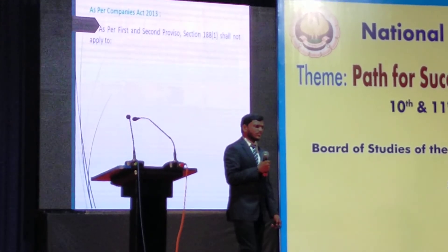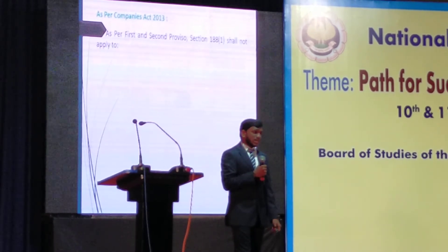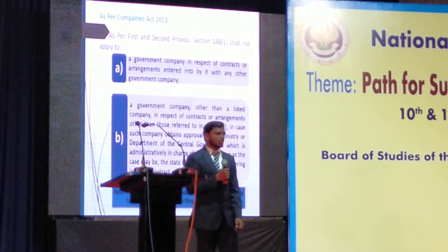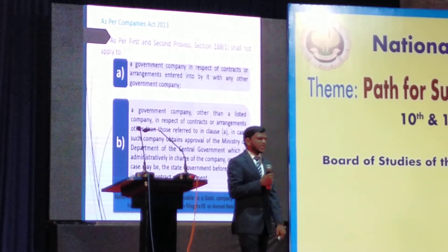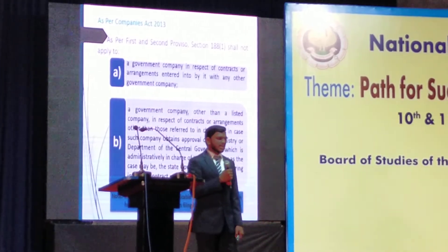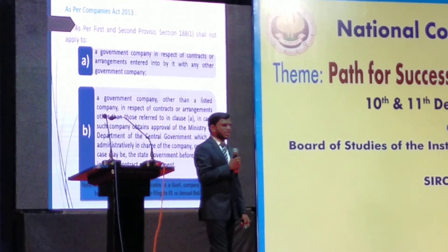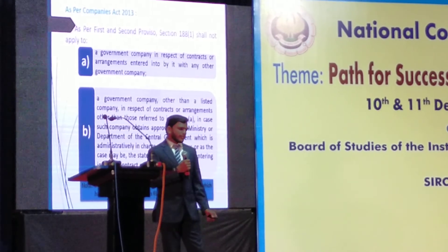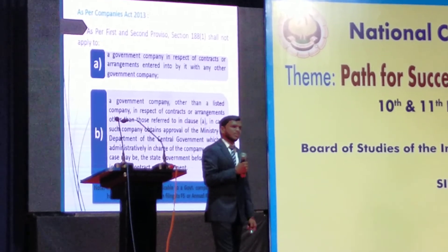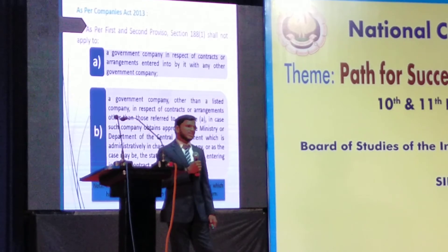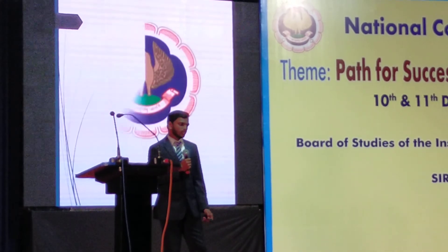As per the provisions of the Companies Act 2013, as per the first and second provisos to subsection 1 of Section 188, these provisions shall not apply to a government company in respect of contracts or arrangements entered into with another government company. A government company other than a listed company in respect of other contracts and arrangements may also be exempt if it obtains approval of the ministry or department of the central government which is administratively in charge of the company, or as the case may be, the state government. However, these exemptions shall not be applicable to a government company if the company has failed to file its financial statements and annual returns with the Registrar within the due dates.